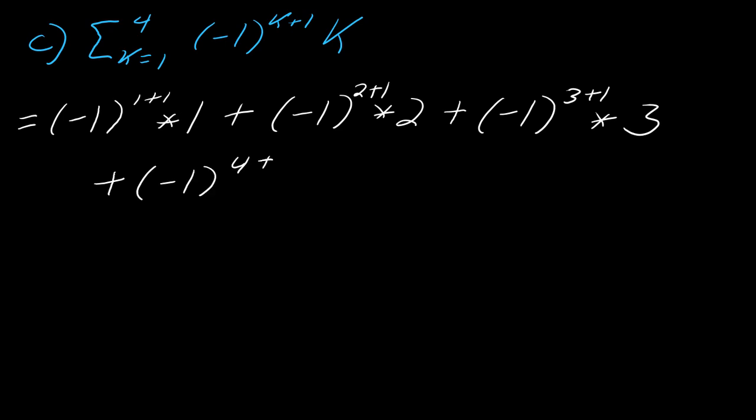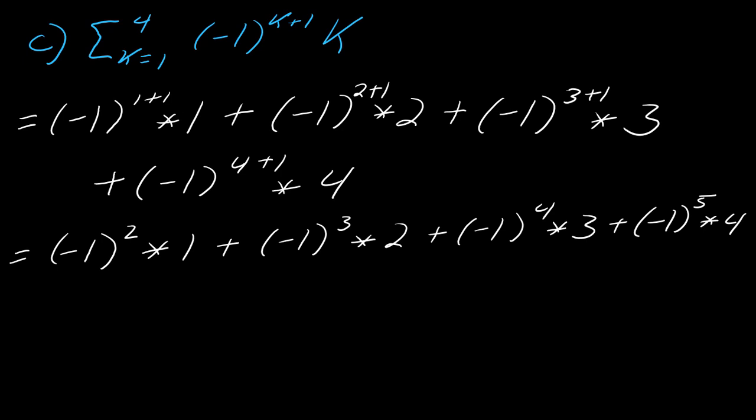So when you actually figure out what these exponents are, this comes out to negative 1 squared times 1. This is negative 1 cubed times 2. This is negative 1 to the fourth times 3. And then negative 1 to the fifth times 4. So really what this is doing is making the signs of the sum alternate. Negative 1 to the second will be positive. This will be negative, this will be positive and negative. So what this looks like is 1 minus 2 plus 3 minus 4. So it's just an alternating signed sum. And then you just add everything up and get negative 2.